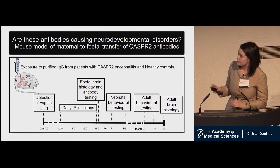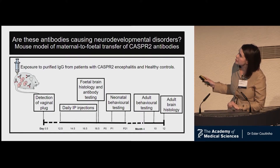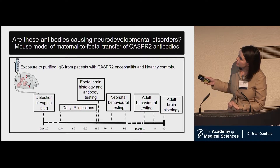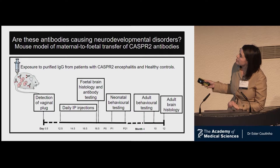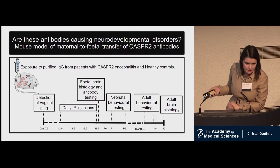To assess this, we exposed time-mated dams to purified IgG from patients with CASPR2 encephalitis and from healthy controls. We did this from gestational day 12 to 18, and then assessed whether there had been efficient transfer of the antibodies. We assessed behavioral outcomes during the neonatal period and the adult period of the offspring, and performed neuropathological studies at termination.